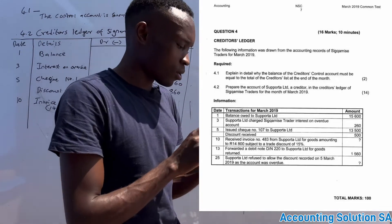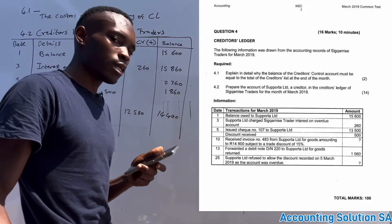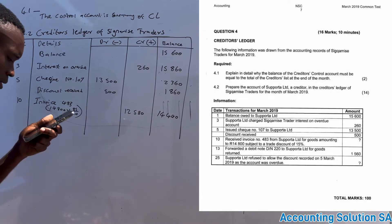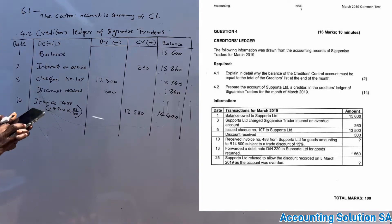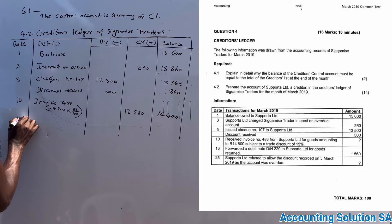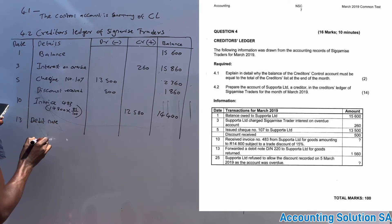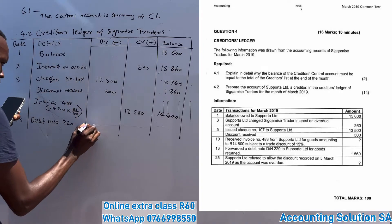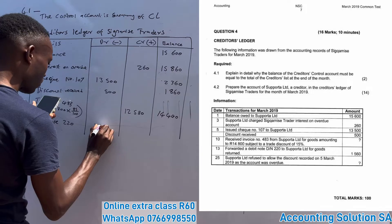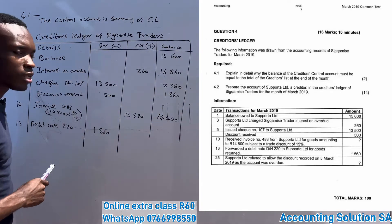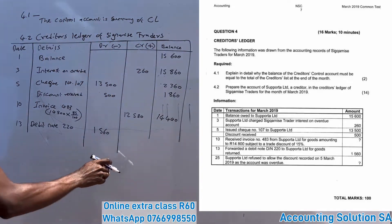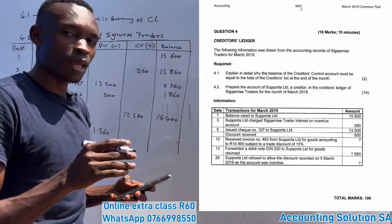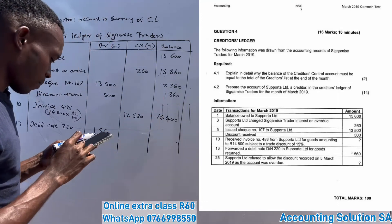On the 13th, we forwarded debit note number 220 to Support Ltd for goods returned, amounting to R1,560. A debit note means we are returning something, so our liability decreases and we debit it. We can't pay for something we have returned. After this entry, subtracting R1,560 from the balance gives us a new balance of R12,880.